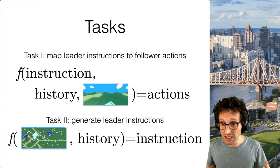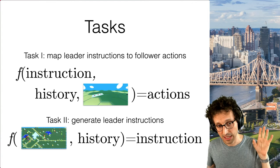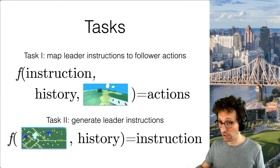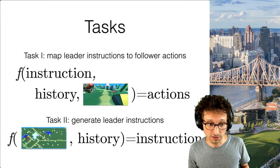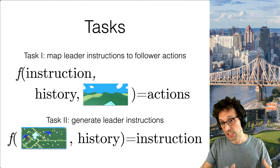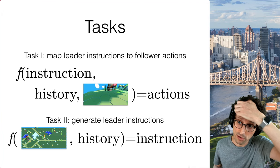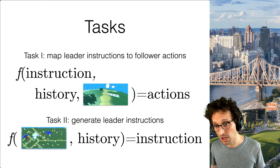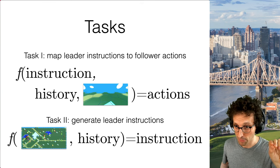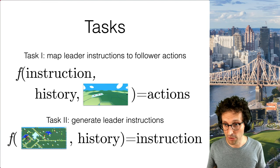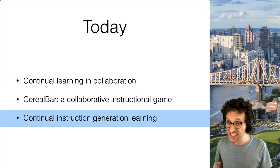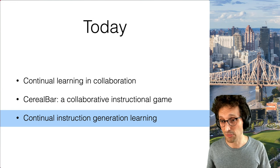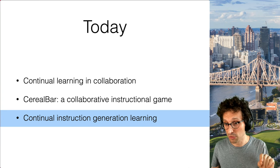There are many possible tasks within Serial Bar, but the two core ones are: language understanding — instruction following, mapping leader instructions and the history of the interaction to follower actions — and generating leader instructions, given the world status the leader sees and the history of the interaction. We introduced Serial Bar in a previous paper addressing the first task. The rest of this talk focuses on generation learning — addressing the second task of generating instructions with a focus on continual learning.